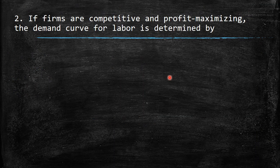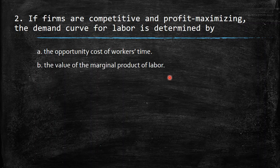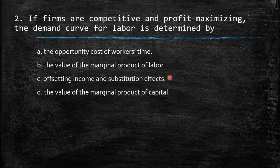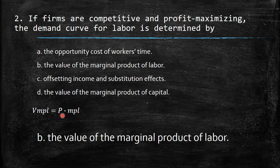We discussed throughout the book that two-thirds of the total income of the U.S. goes to labor, so we are talking about C, 70%. For the next question — if firms are competitive and profit-maximizing, the demand curve for labor is determined by the value of the marginal product of labor, which is the correct answer.